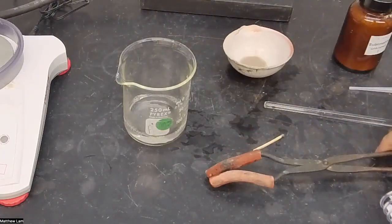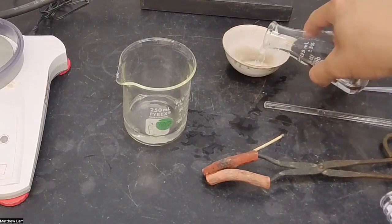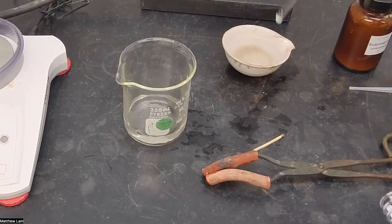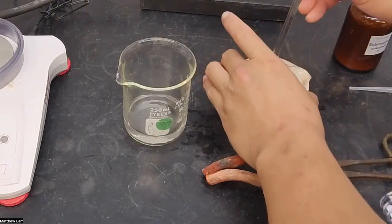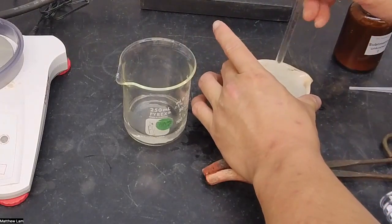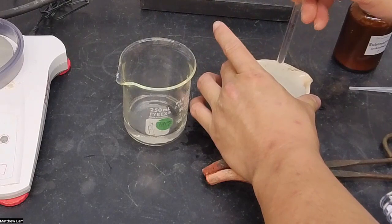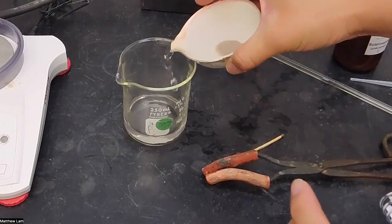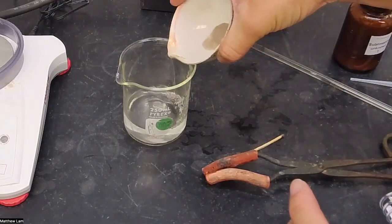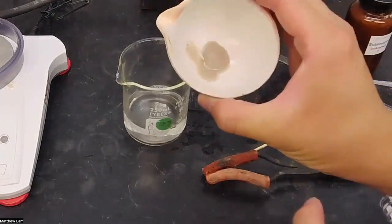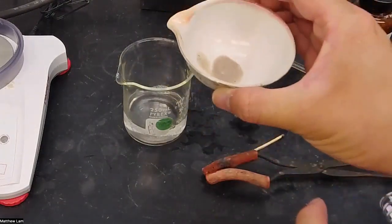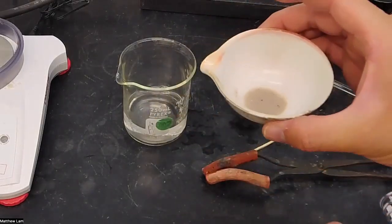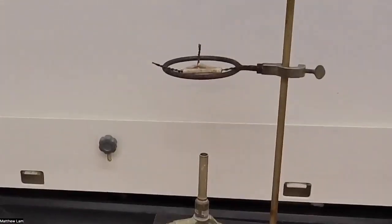And then one more time. Now, what should be left over in this evaporating dish is sand and water. But we want to determine how much sand is there. So we need to boil off the water. We're going to put this back up on our apparatus here, and we're going to boil off the water.